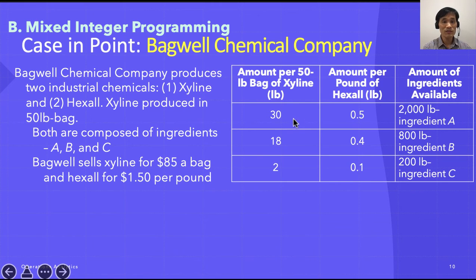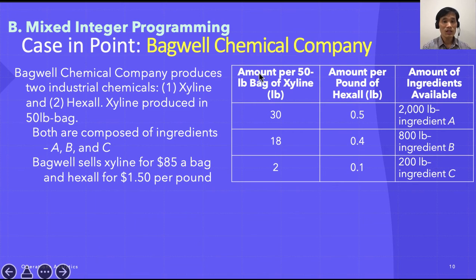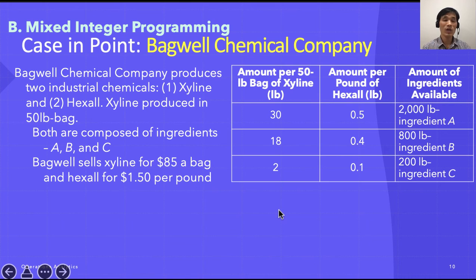For example, one bag of Xylene requires 30 pounds of ingredient A, and one pound of Hexol requires 0.5 pounds of ingredient A, with a limit of 2,000 pounds. Similarly, for ingredient B, a 50-pound bag of Xylene requires 18 pounds and Hexol requires 0.4 pounds. For ingredient C, a 50-pound bag of Xylene requires 2 pounds and Hexol requires 0.1 pounds.